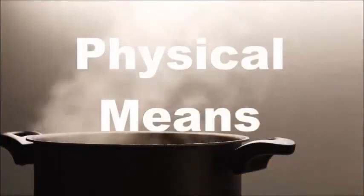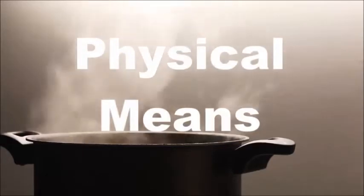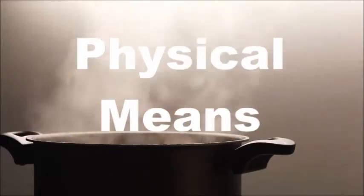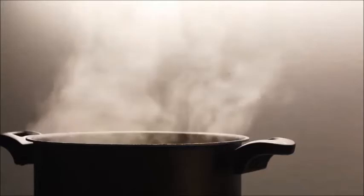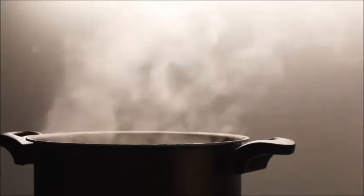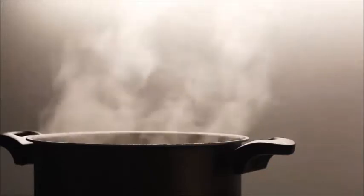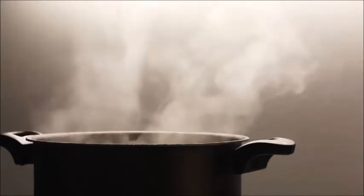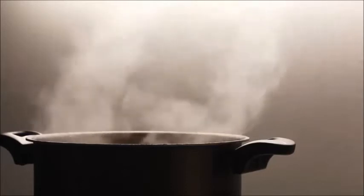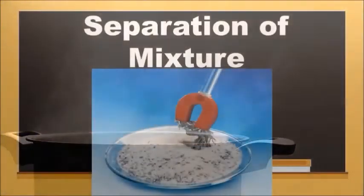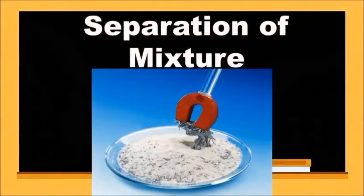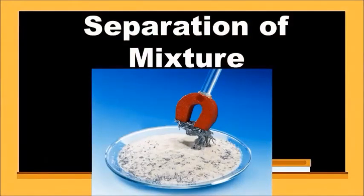Any mixture can be separated by physical means into pure substances without changing the identity of a substance. From a homogeneous mixture of sugar and water, sugar can be recovered from a water solution by heating the solution and evaporating it to dryness, and condensing the vapor will give us the water component. To separate the iron and sand mixture, we can use a magnet to remove the iron filings from the sand, because sand is not attracted to the magnet.